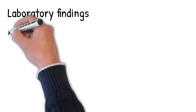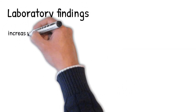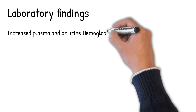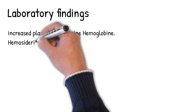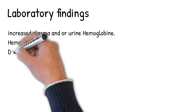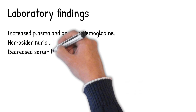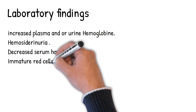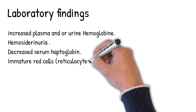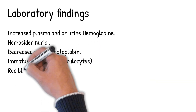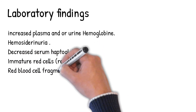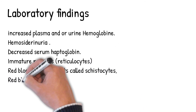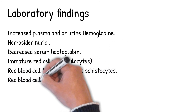Laboratory findings include increased plasma and urine hemoglobin, hemosiderinuria — where proximal renal tubule cells convert iron and hemoglobin into hemosiderin — and decreased serum haptoglobin. Diagnosis is confirmed by a constellation of symptoms and is largely based on the presence of anemia, an increased proportion of immature red cells called reticulocytes, and a decrease in the level of haptoglobin, a protein that binds free hemoglobin.